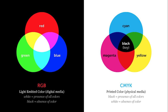CMYK stands for cyan, magenta, yellow, and key color, or black. That is used when you are printing. So if you have a full color photograph that you want to print onto a piece of paper, you have to use CMYK — there's no other color system or mode that you can use to reproduce the original full color image.